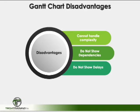Gantt charts did lose their appeal in construction early on because, as projects became more complex, these charts did not show the dependency that one activity had on another. In other words, if one activity was delayed, future activities were not moved down the timeline. But most of these disadvantages have been addressed in many of the current software packages that use Gantt charts.